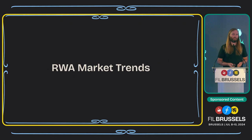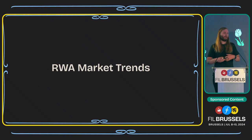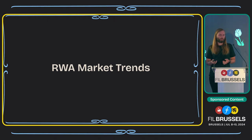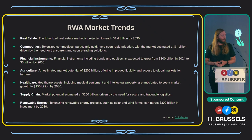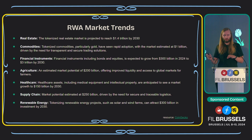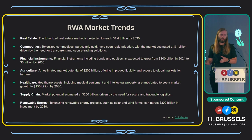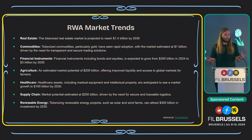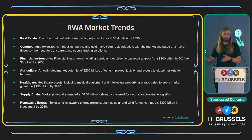Right now a lot of people are talking about RWAs, so I'm going to go over some highlights from a really good report by CoinGecko. If you're interested in RWAs at all, I'd really recommend googling the CoinGecko RWA 2024 report — they did a really deep dive into the current state of the market, where it's going, and it's just a really good informational source. The tokenized real estate market is projected to hit $1.4 trillion by 2030, which is extremely high.